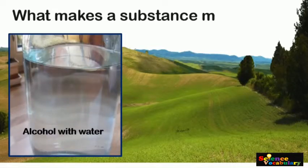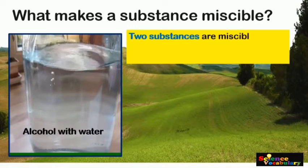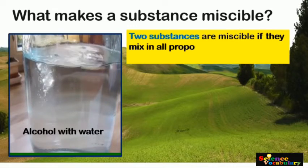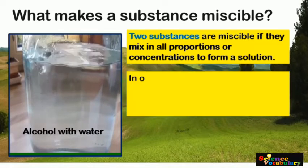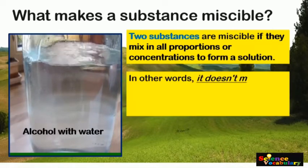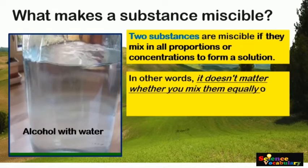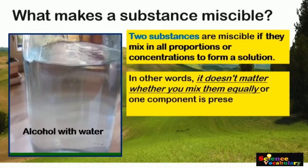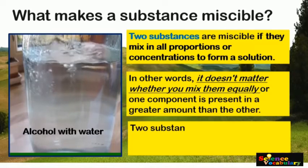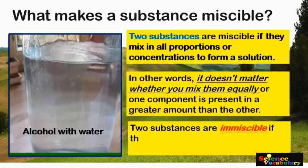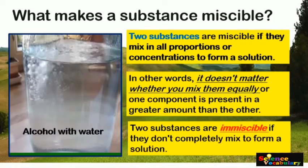What makes a substance miscible? Two substances are miscible if they mix in all proportions or concentrations to form a solution. In other words, it doesn't matter whether you mix them equally or one component is present in a greater amount than the other. Two substances are immiscible if they don't completely mix to form a solution.